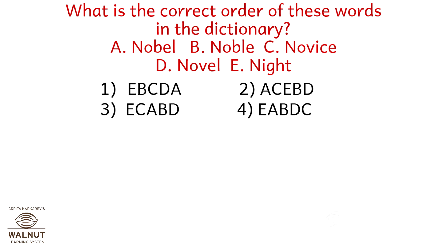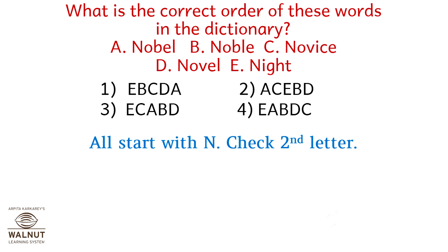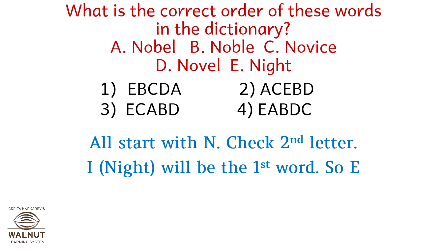What is the correct order of these words in the dictionary? A: Nobel, B: Noble, C: Novice, D: Novel, E: Knight. All start with the letter N, so let's check the second letter. K of Knight will be the first word, so E will come first — option E.